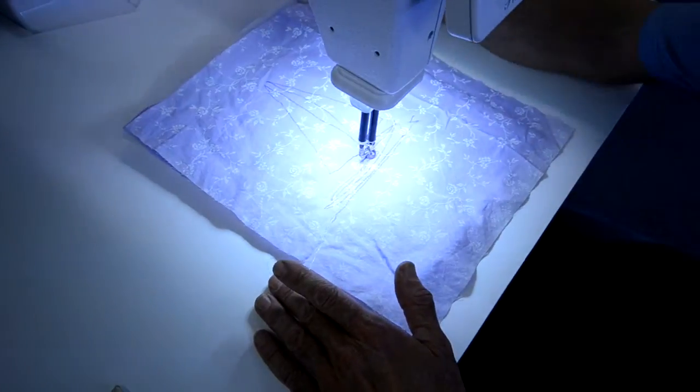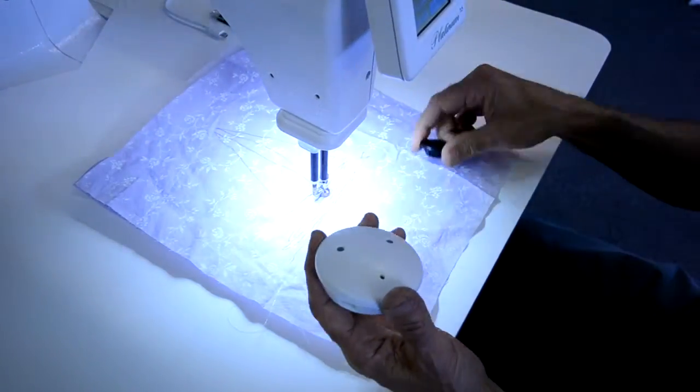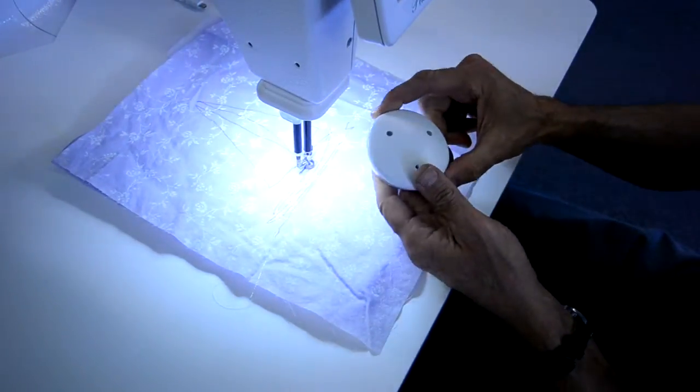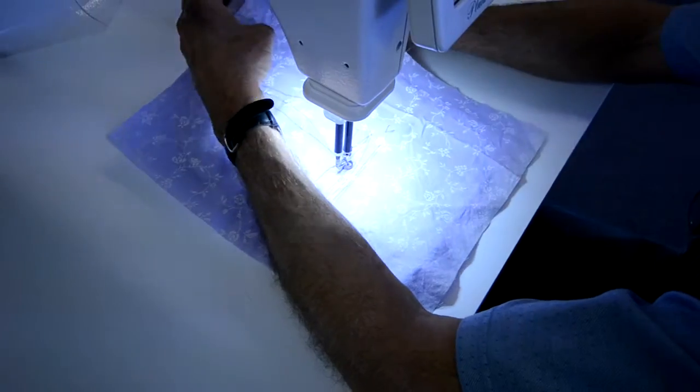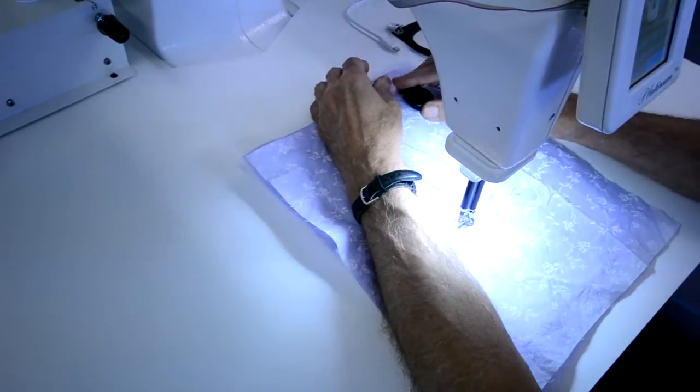Now we're going to do it with the stitch regulator. This has a magnet on it, and I turn this on. This remote has a flashing LED that we put underneath here. This will help keep my stitches all the same length.